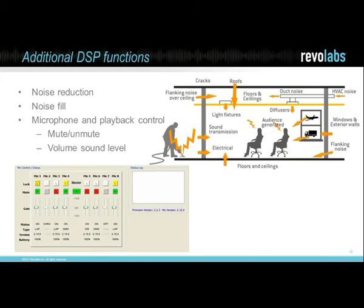The next function is actually counterintuitive — noise fill. The DSP can actually inject noise into a signal. Have you ever been on a call when someone stops speaking and it gets really quiet and you think you're disconnected? What the DSP does is inject a little bit of background noise so you can hear there's still a connection on the far end — because it becomes difficult to know whether you're disconnected, on mute, or if they've just stopped talking. You don't want to hang up when you're actually still connected and they're just being quiet.